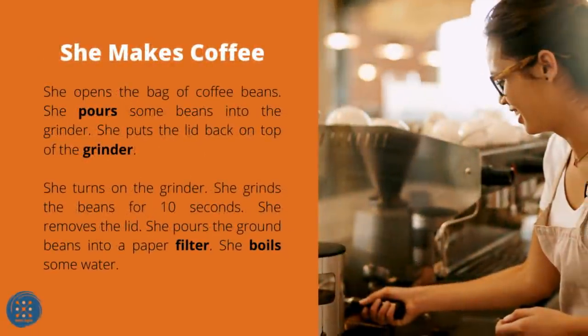She Makes Coffee. She opens the bag of coffee beans. She pours some beans into the grinder and puts the lid back on top. She turns on the grinder and grinds the beans for 10 seconds. She removes the lid and pours the ground beans into a paper filter. She boils some water.